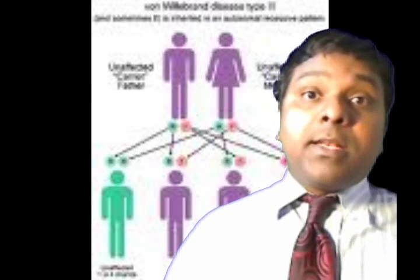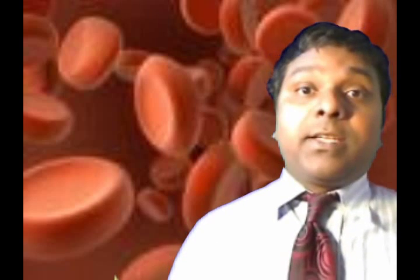Desmopressin increases the release of von Willebrand factor from endothelial cells. The important problem is that after four doses, patients develop tachyphylaxis — so remember that after four doses, patients taking desmopressin develop tachyphylaxis.